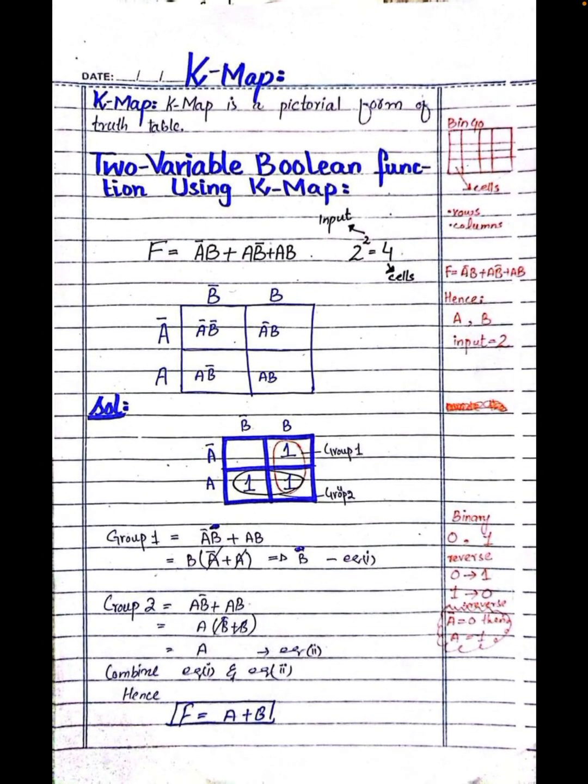So basically, we use the K-map to minimize the Boolean function. The minimized map function requires fewer terms, which means the cost of implementing the logic circuit will be less and the circuit will be more efficient.